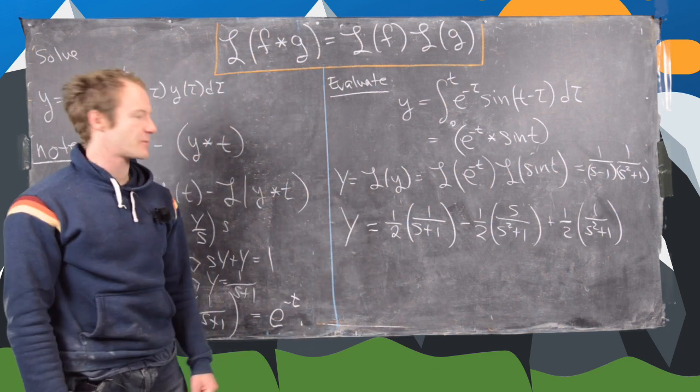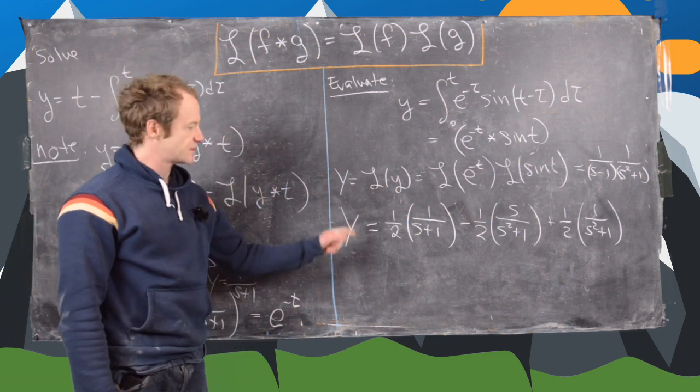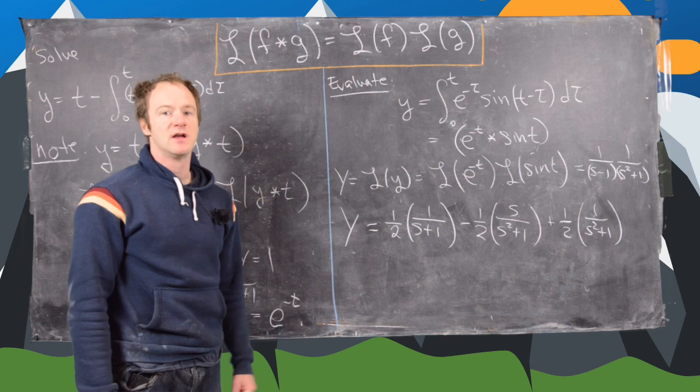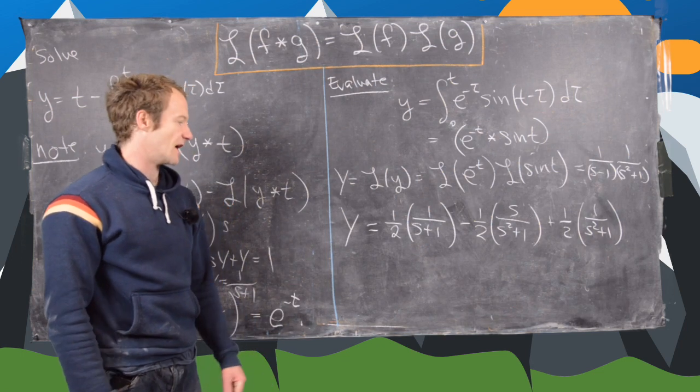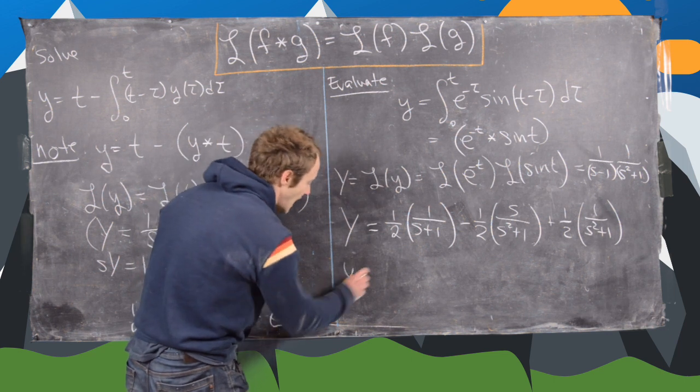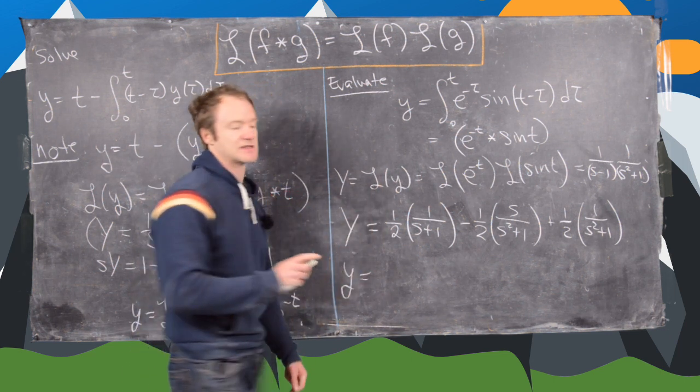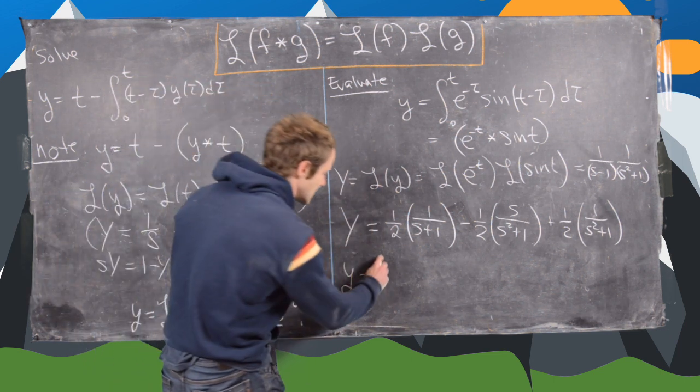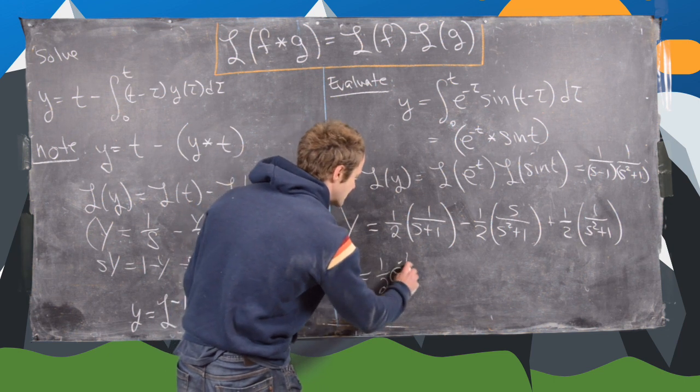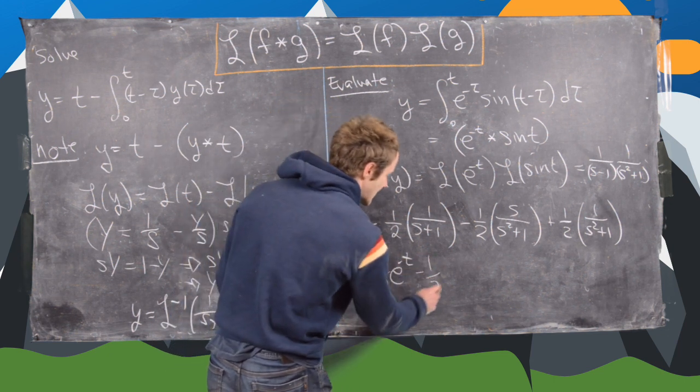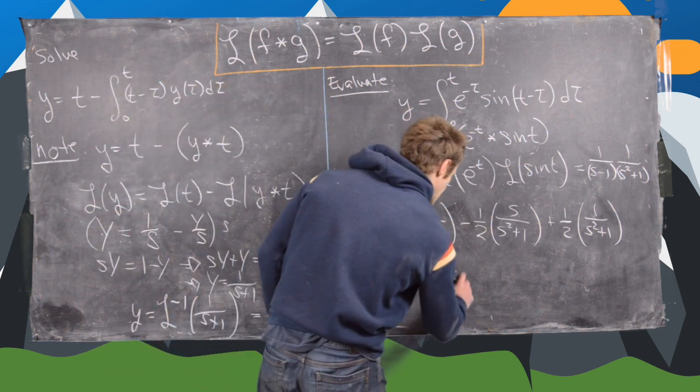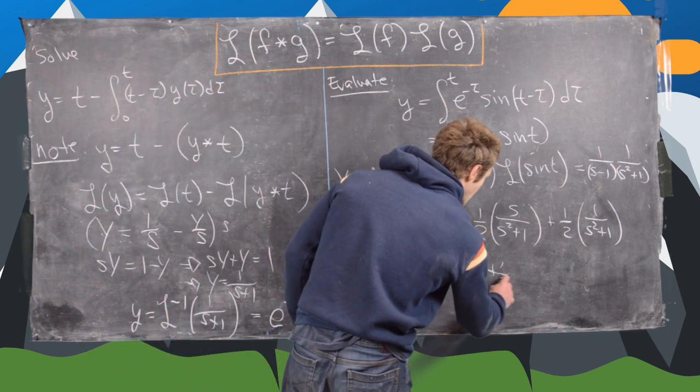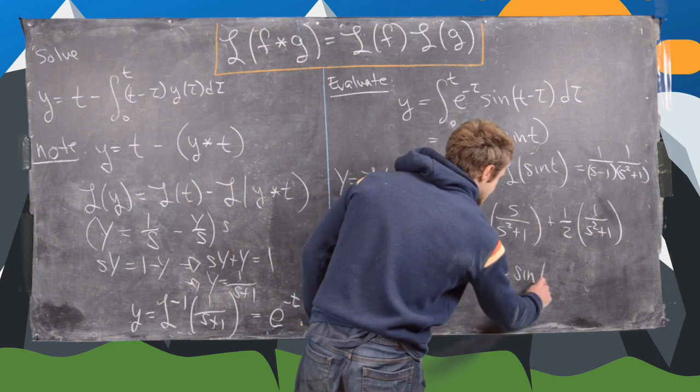It looks like it worked. We've got the partial fraction decomposition. So now what we can do is just read off a Laplace transform chart, which I'll let you look one of those up—they're easy to find. We'll get y equals the inverse Laplace transform of all of those. So that's going to be one half e to the minus t minus one half cosine of t plus one half sine of t.